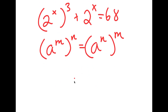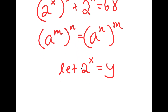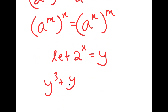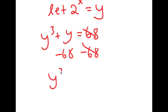From here I'm going to let 2 to the power of x equal to the variable y. So if I substitute y in for 2 to the power of x, I get y to the power of 3 plus y is equal to 68. Now I can subtract 68 on both sides, so I get y to the power of 3 plus y minus 68 is equal to 0.